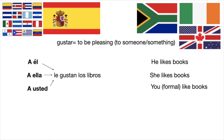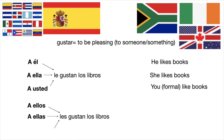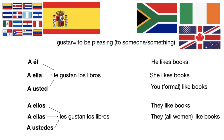If I want to say 'she likes books,' I would say a ella le gustan los libros. For 'you formal like books,' I say a usted le gustan los libros. The corresponding forms in the third person plural are a ellos, a ellas, and a ustedes — and the le changes to les: les gustan los libros, because now it's pleasing to a plural group of people in the third person.